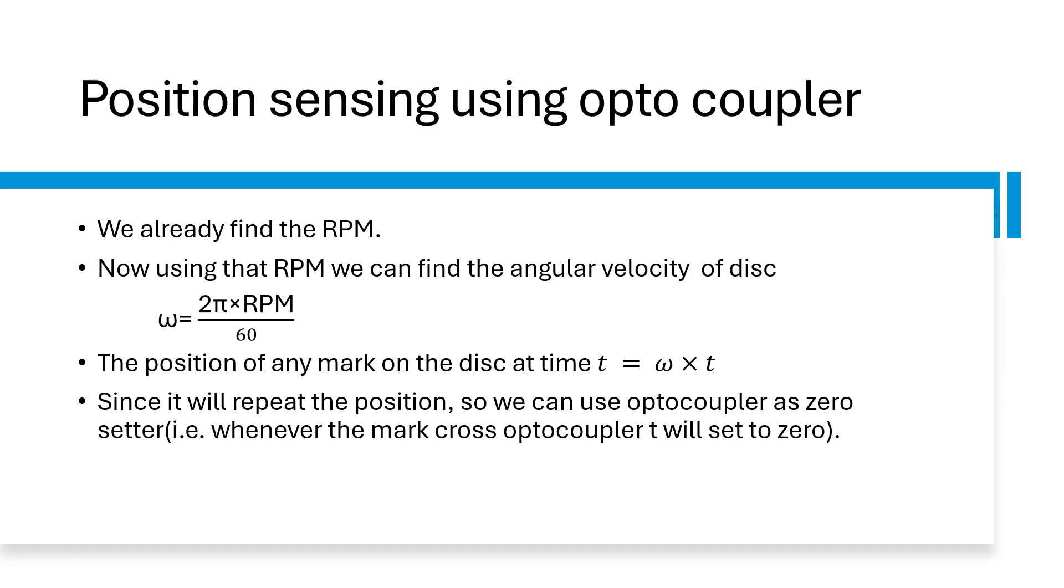Here is another use of this experiment, which is position sensing, in which we will sense the position of any mark on the 15-slotted disc. So what we will do, we already know the RPM which we have already calculated. So with this RPM we can find the omega which is the angular velocity of the disk.